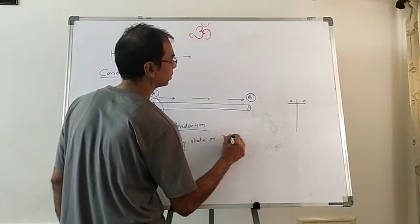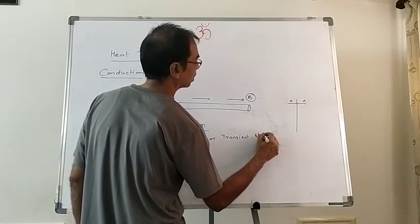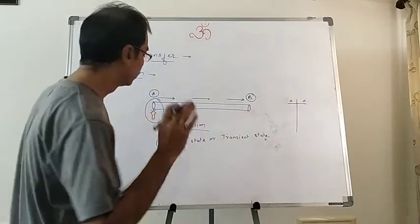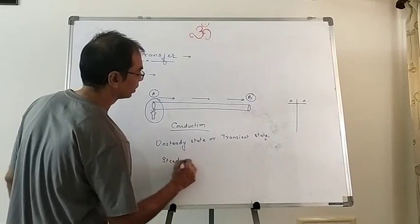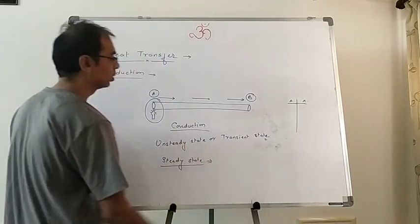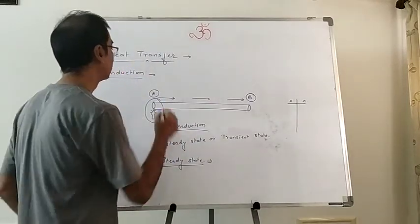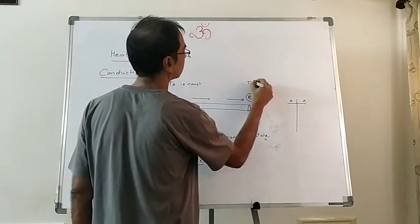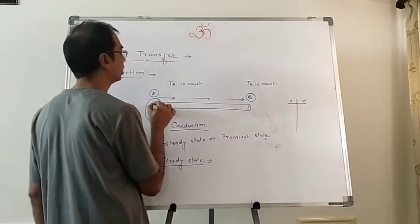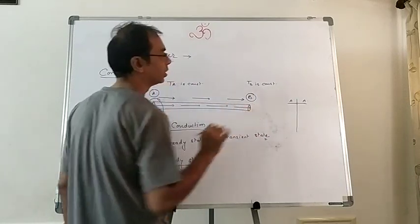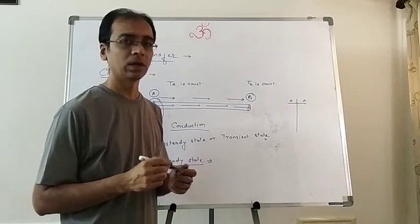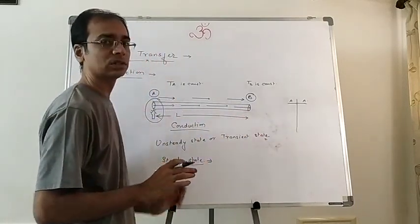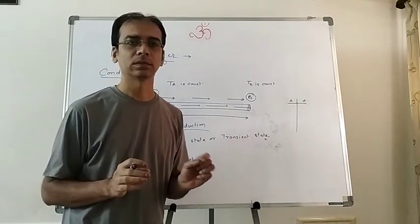We are going to study the steady state. What is steady state? You are heating from one end, but the temperature of A is not changing — T_A has become constant, and T_B is also constant. Whatever amount of heat you are giving, it is just transferring from one end to the other; nothing is being absorbed.